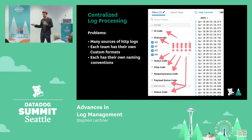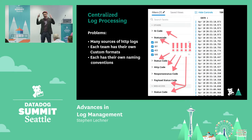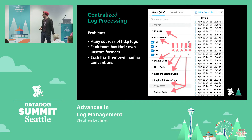One team might call it HTTP code, another status code, another response code, another payload code. Kevin would have run into this and said, 'Well, which one do I query on?' It would have been much harder to get an aggregated view across all teams. He'd have to know which team uses which naming convention in order to understand the health of his HTTP responses.